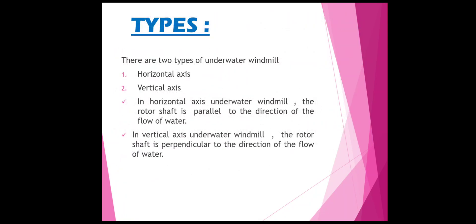There are two types of underwater windmill. The first is the horizontal axis underwater windmill and the second is the vertical axis underwater windmill. In the horizontal axis type, the rotor shaft is parallel to the direction of flow of water. In the vertical axis type, the rotor shaft is perpendicular to the direction of flow of water.